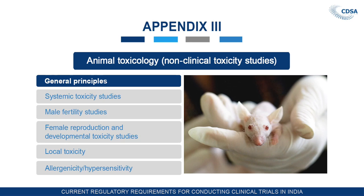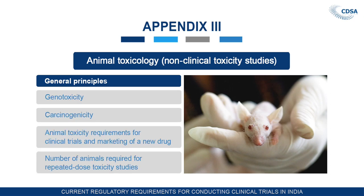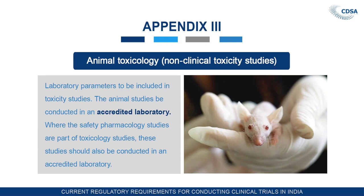Appendix 3 is animal toxicology — that is, pre-clinical non-clinical toxicity studies. The general principles covered include systemic toxicity studies, male fertility study, female reproduction and developmental toxicity study, local toxicity, allergenicity, hypersensitivity, genotoxicity, carcinogenicity, animal toxicity requirements for clinical trial and marketing of new drugs, number of animals required for repeated dose toxicity study, and the number of animal species. Laboratory parameters to be included in the toxicity study are also given. Animal studies must be conducted in an accredited laboratory; from 2005 GLP has been mandatory and the lab must be accredited.